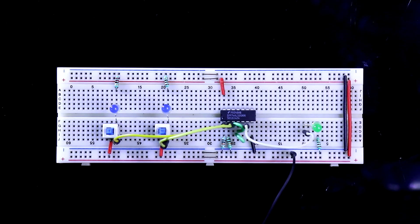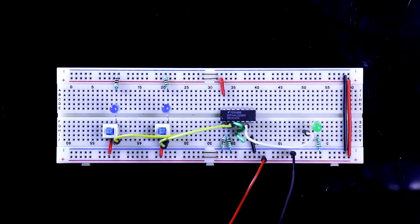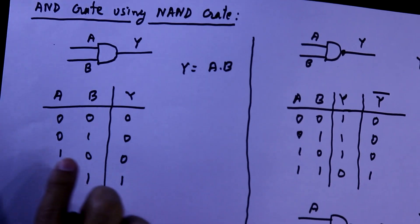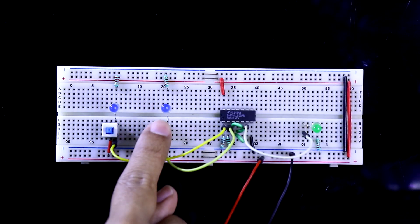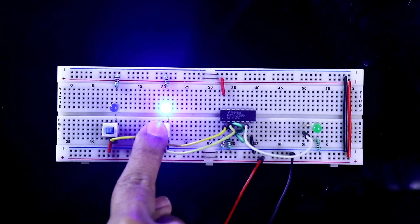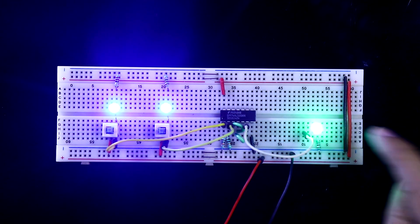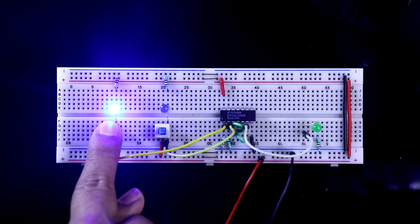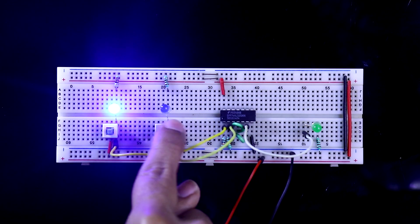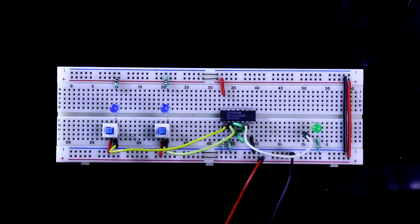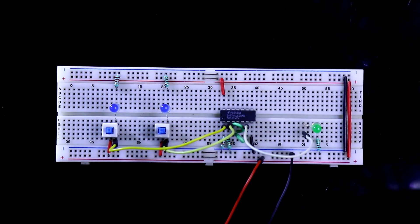This is the truth table of AND gate: 0 0 → 0, 0 1 → 0, 1 0 → 0, and 1 1 → 1. So like this we have verified the AND gate using NAND gate. This is all for today. Thanks for watching.